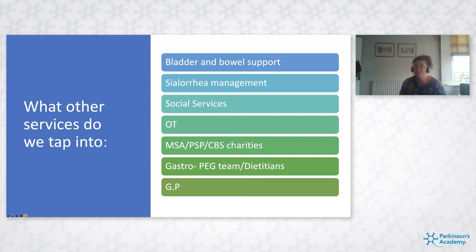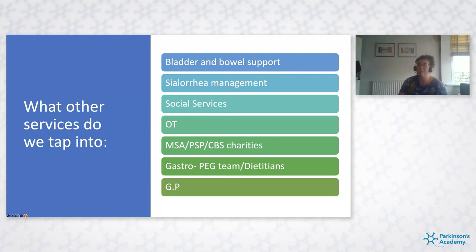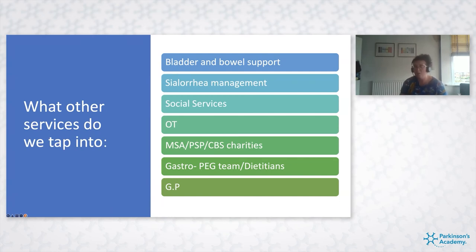The services we tap into include the bladder and bowel support service — urology or a nurse-led service — and we refer locally for sialorrhoea problems including botox. Social services help with funding and carer support, and the OTs and physios who go out to homes are very important — they can tell me what's going on at home and help with equipment assessments. We have good links with the gastro team for people who need PEGs. Clear communication with the GP is essential — we always write to GPs after clinic regarding medication continuity and support services, and link in with district nursing teams.